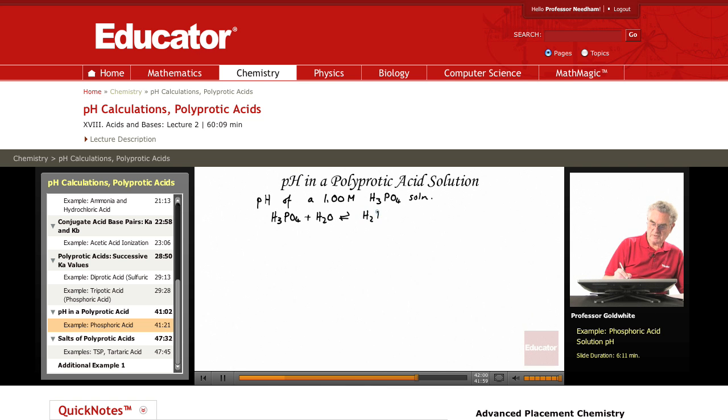H2PO4- plus H3O+. At the start, 1.00 at equilibrium, 1.00 minus x, x, and x.